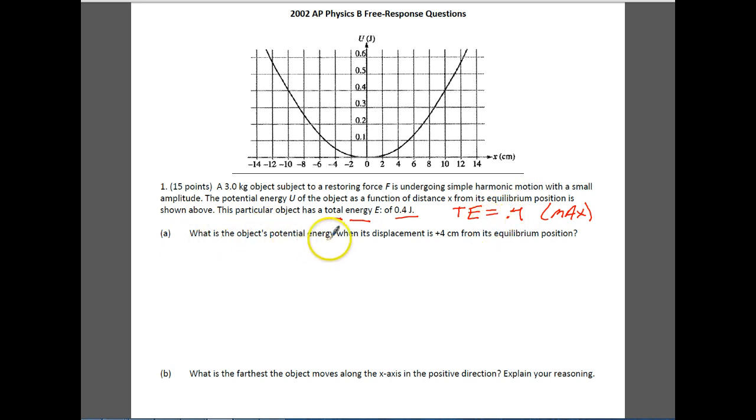They want to know what is the object's potential energy when its displacement is 4 centimeters from equilibrium. So if we go to 4 centimeters, positive 4 centimeters, and move up on the graph, put a dot, and move over, we see that it's about half of 0.1. Be careful because your answer here is not 0.5. That's way up here. The answer that we want is going to be potential energy at 4 centimeters is equal to 0.05 joules. Notice this is half of 0.1, and that would be 0.05. So you get a point for reading a graph, which is always nice.